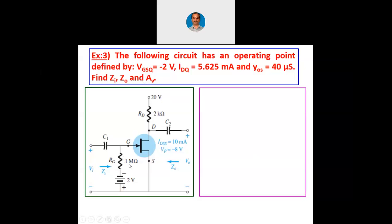Since Rg is 1 mega ohm, directly we can write Zi equals Rg equals 1 mega ohm. For Z naught, we write capital Rd in parallel with small rd, where small rd is 1 over Yos. Once we compute both, we can find Av as minus gm into capital Rd in parallel with small rd. But first we need to find the transconductance gm. Since the gate-to-source voltage and drain current in the quiescent region are already given, we can directly find gm under quiescent conditions.